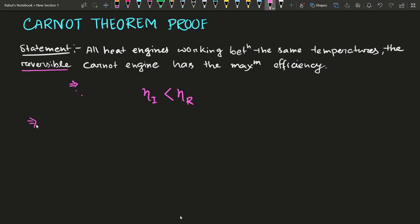To prove this, we'll use a mathematical trick. We'll first consider that eta_i is greater than eta_R. If we can show that assuming this violates any fundamental relation in thermodynamics that is already proved, then we can easily say that this assumption is not true and the reverse — that eta_i is less than eta_R — must be true.